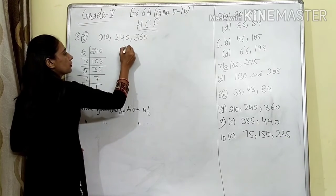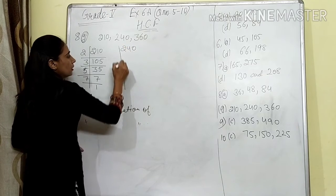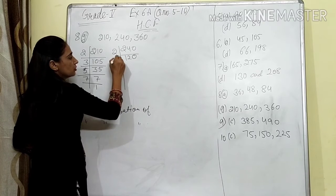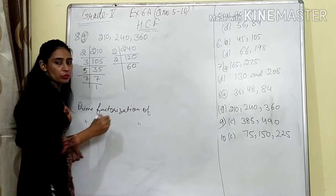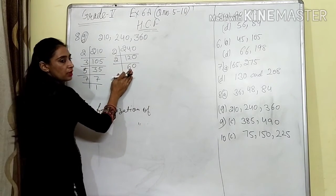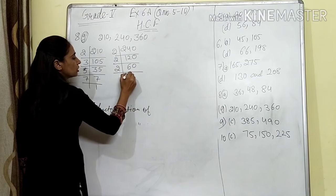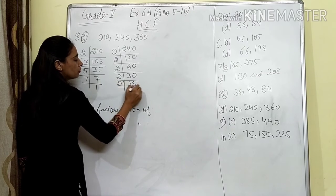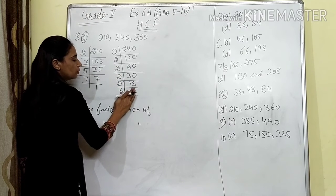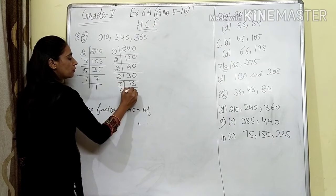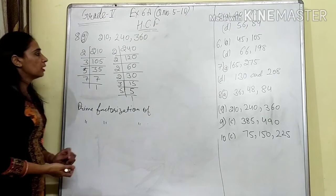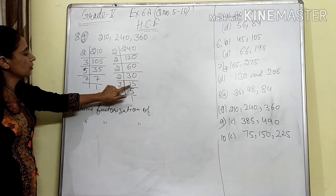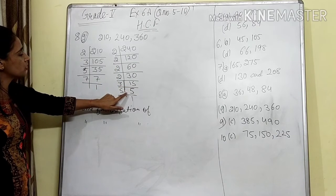Now for 240: last digit is 0, so divisible by 2. Divide by 2 repeatedly: 2 × 2 × 2 × 2 = four times. Then 15 comes — not on 2, so 3 fives are 15, and 5 ones are 1.